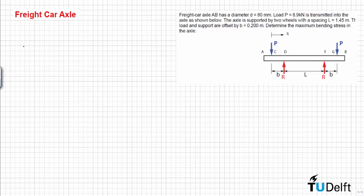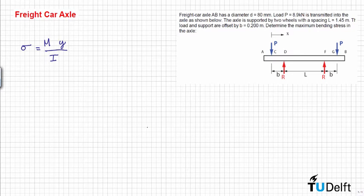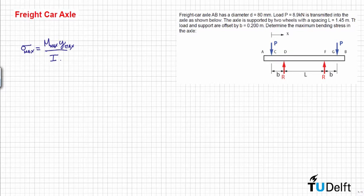The bending stress is equal to the moment times y, the distance from the neutral axis, divided by the moment of inertia. Since the moment of inertia is constant because the cross-section of the beam is constant, the maximum bending stress occurs where M is maximum and y is maximum. We need to find the location of the maximum moment and also the maximum distance y.